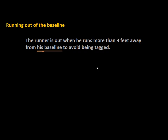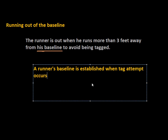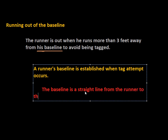That's a little bit different than the general baseline. The rule clarifies what 'his baseline' means: a runner's baseline is established when the tag attempt occurs, and it is a straight line from the runner to the base he is attempting to reach.